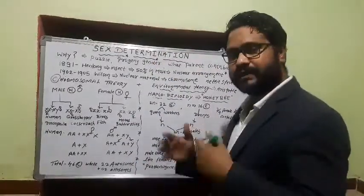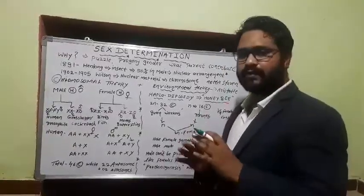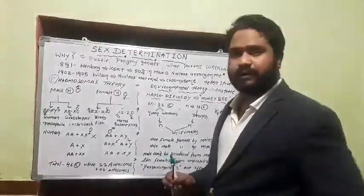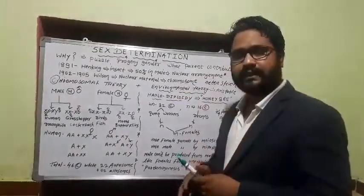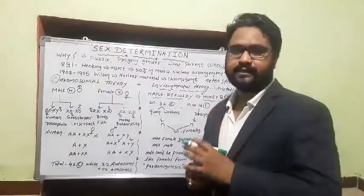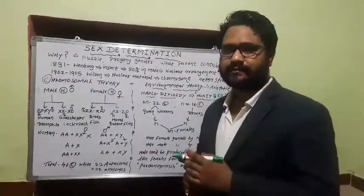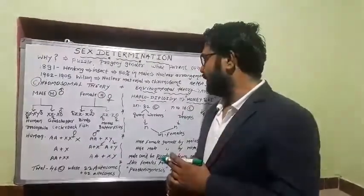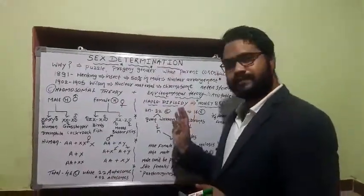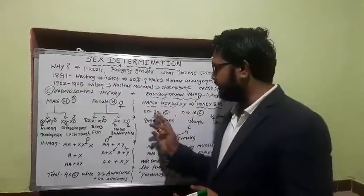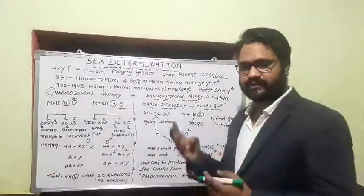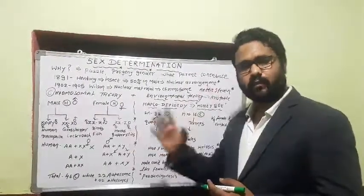Now we come to the interesting topic saved for the end — the socialized insect, honeybees, which we cultivate for honey. There is also fascinating social groupism in a honeybee colony. Mainly three types of honeybees are present: queens and workers, which are both female, and drones, which are male. When diploid, honeybees give rise to queens or workers; when haploid, they give rise to drones.